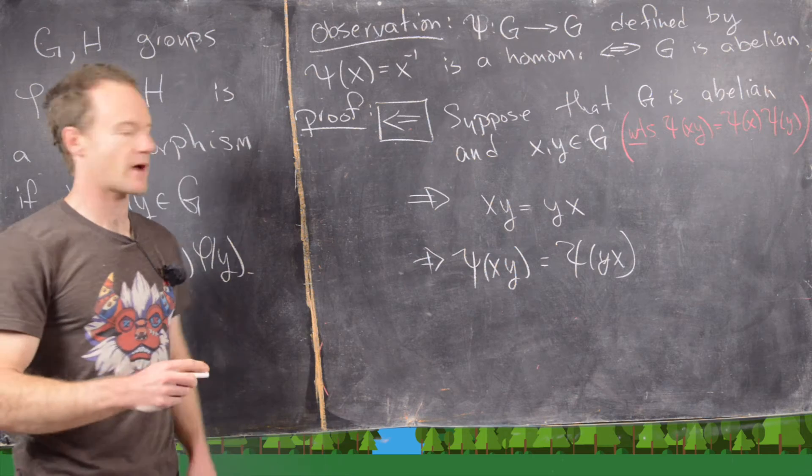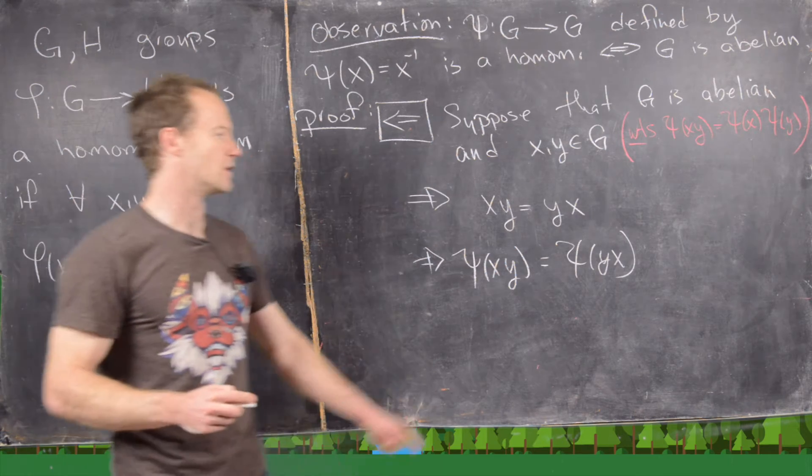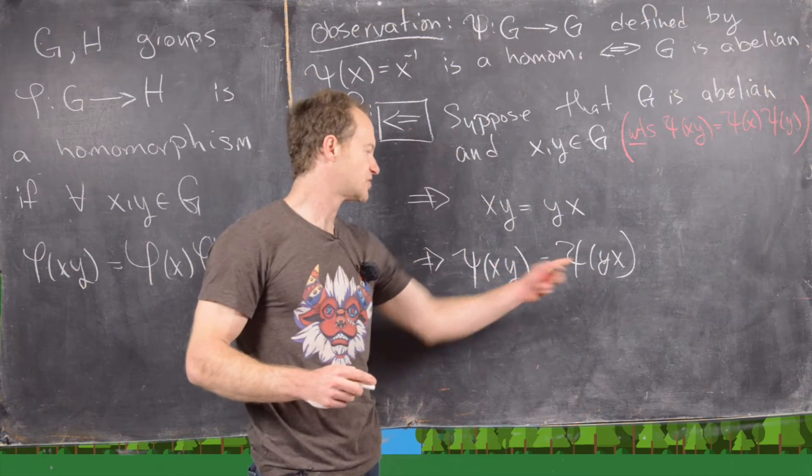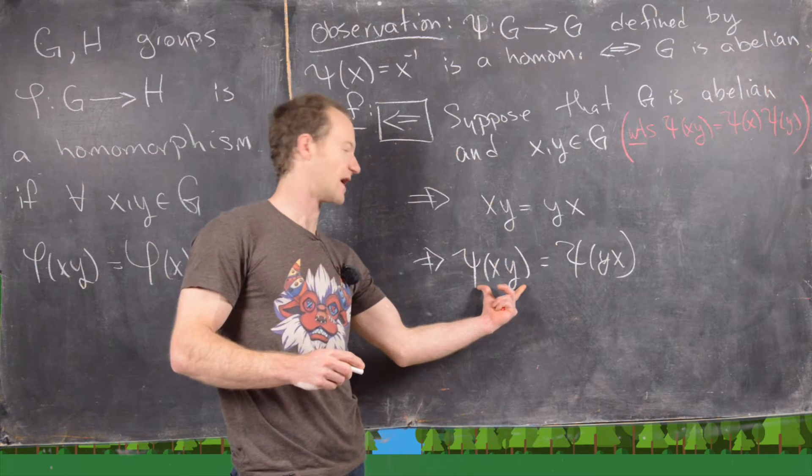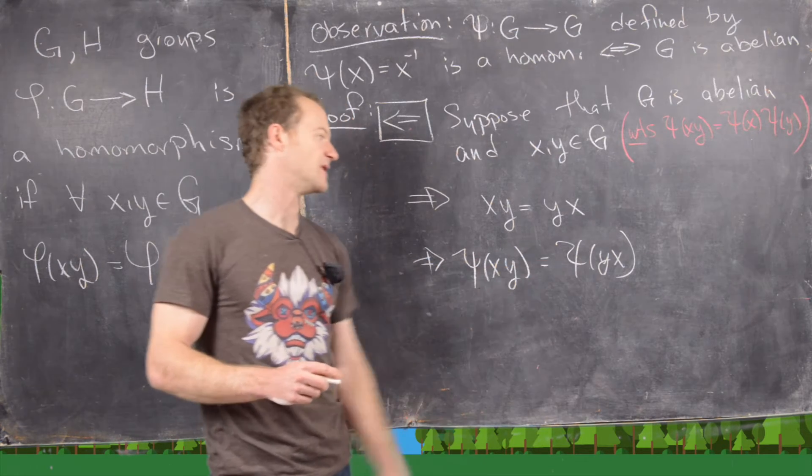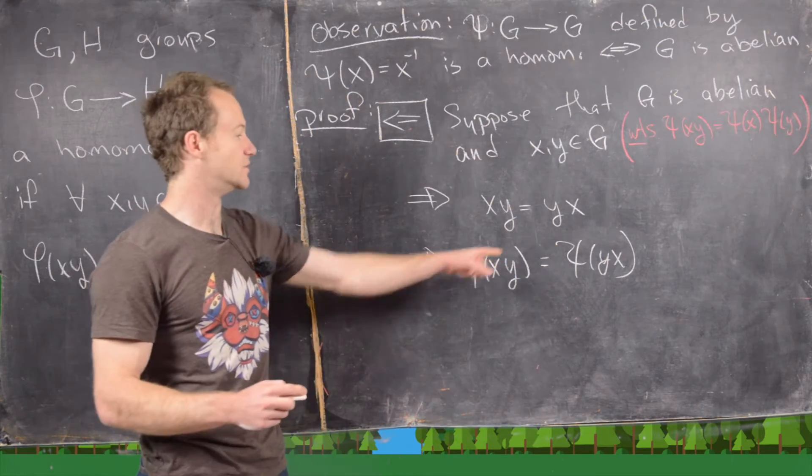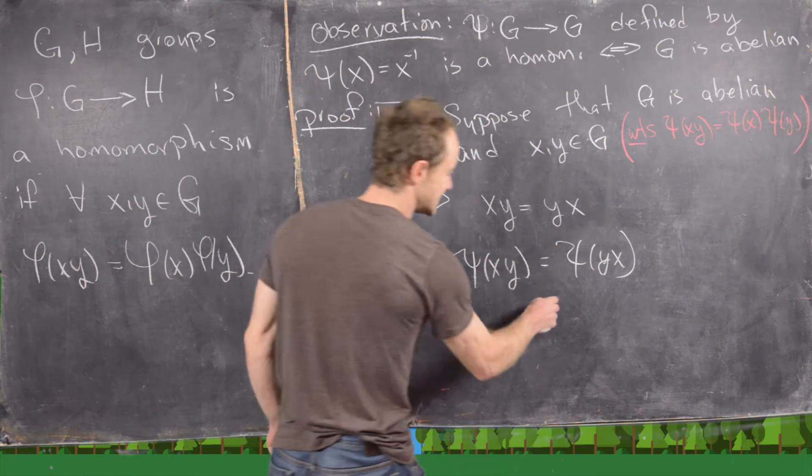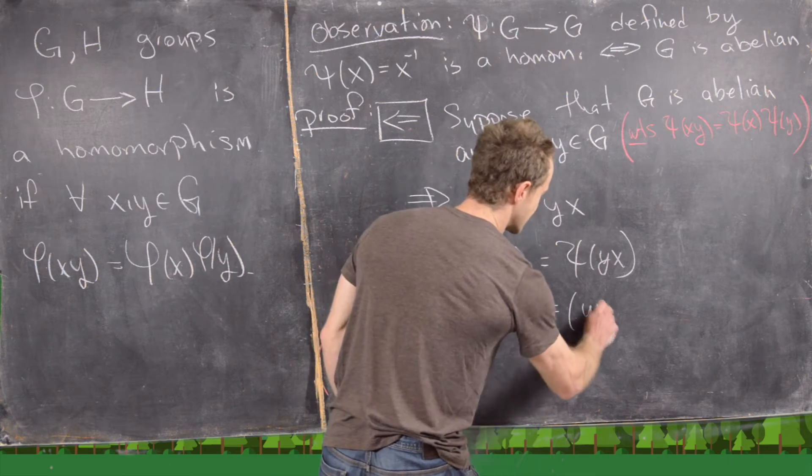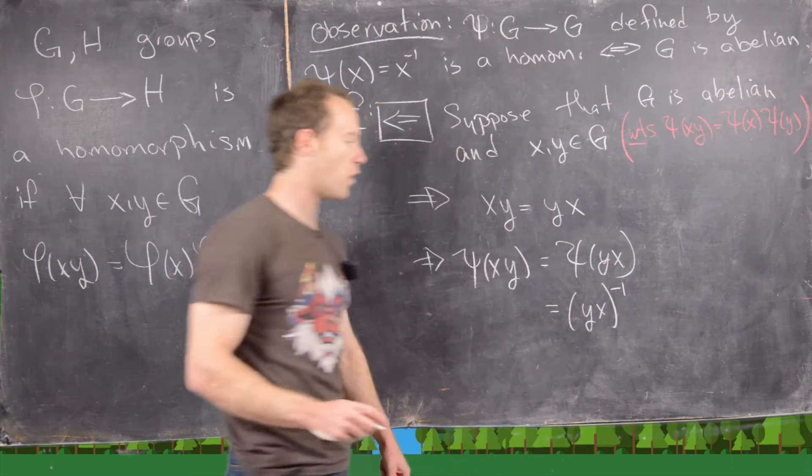You can play around with it a little bit, but you'll see that it'll be most advantageous to leave this symbolically as psi applied to xy, but then actually do what the function psi is defined to do on the right-hand side, which is take the inverse. So this is going to be yx quantity inverse.